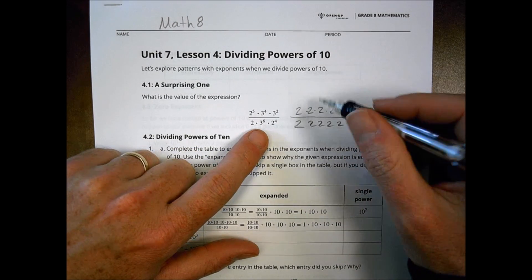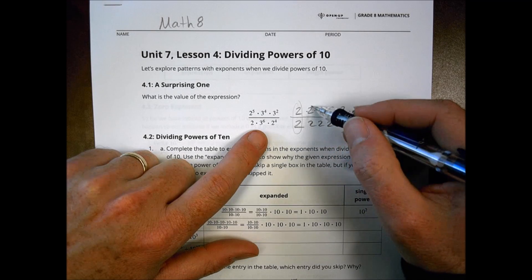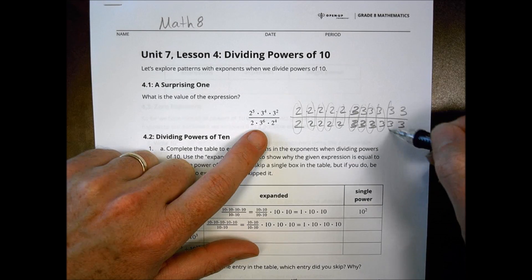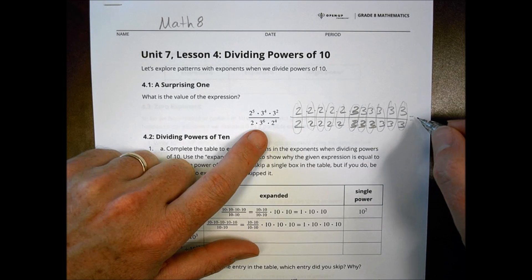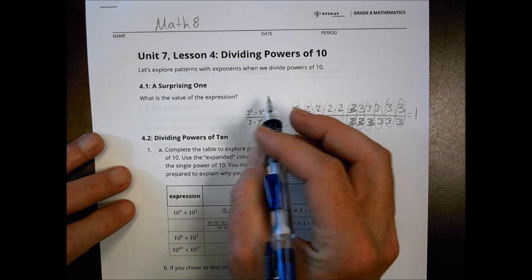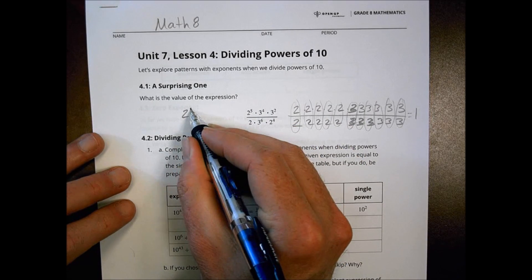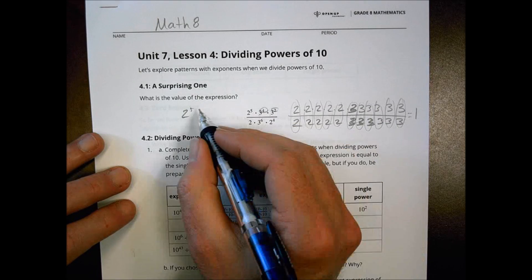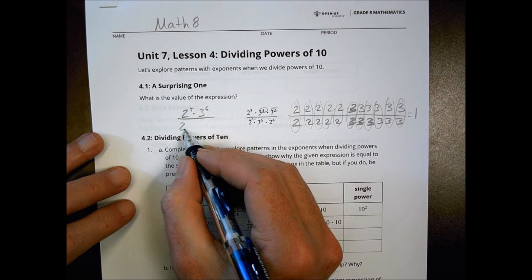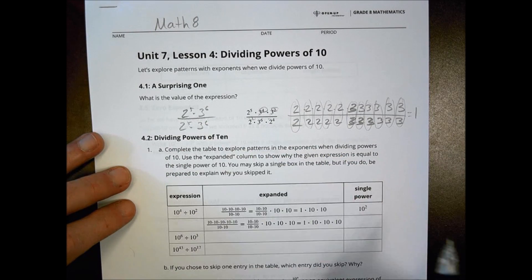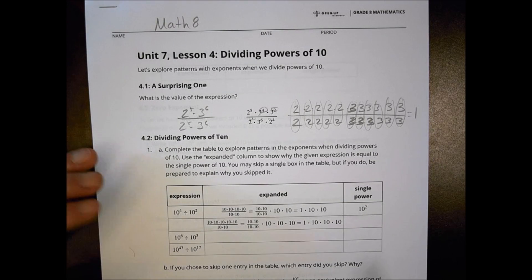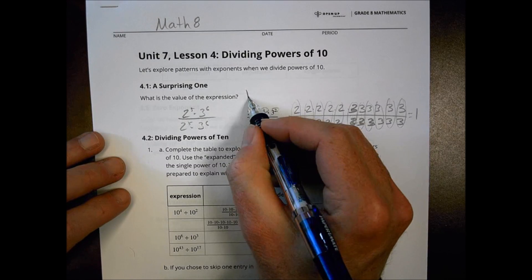So just knowing what we know about fractions, we notice that this is one, one, one, one, one. Like they're all pretty much canceling each other out. So the whole thing equals one. It's kind of crazy, isn't it?